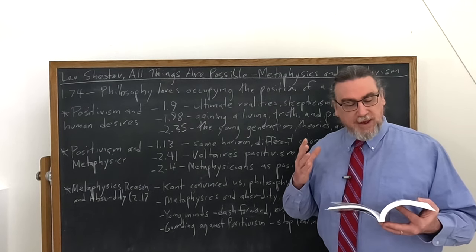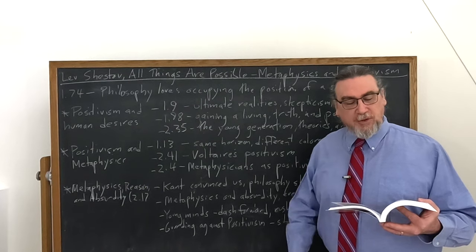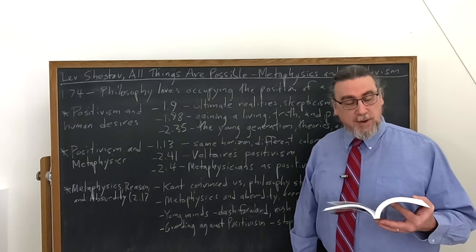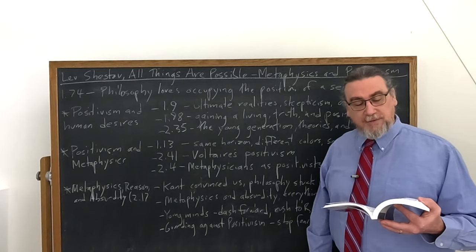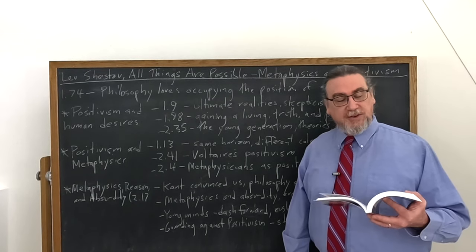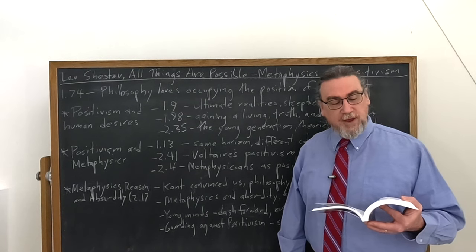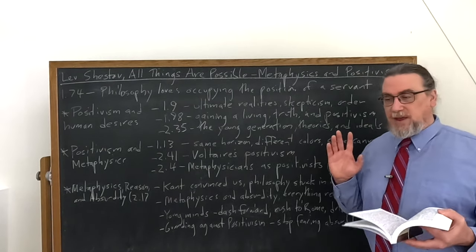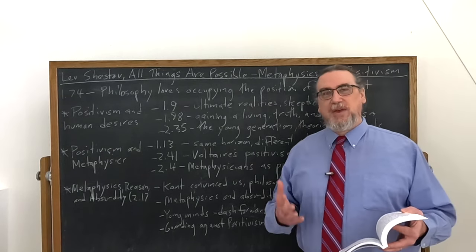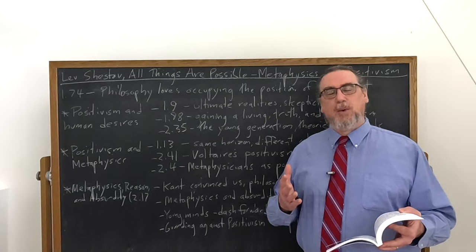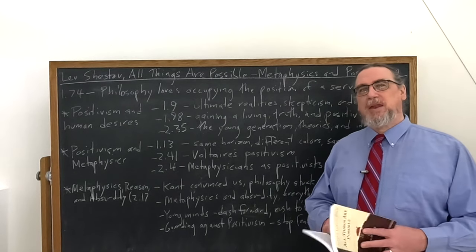Turns out that the originality that they feel themselves pursuing, inhabited by, isn't really that original. Shestov says they find themselves rushing into the same old Rome, whether, as we know, all roads lead, or to use more lofty language, rushing into the stable, whether all roads leave. And then he says, this is basically a type of positivism. But then he suggests to us a way to avoid this.